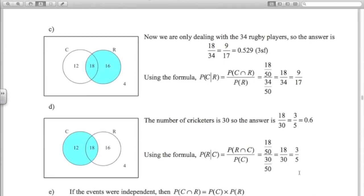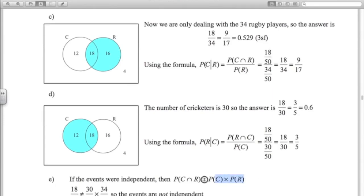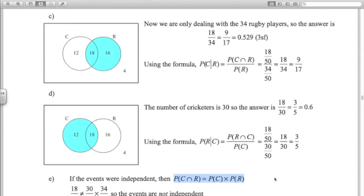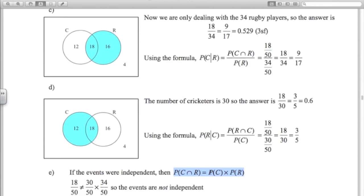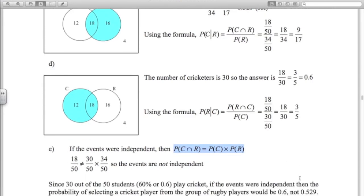Are these two events independent? If they are, then this would be true. Remember that. Don't go on gut instinct. You have to show either that that is true or not true to prove if two events are independent or otherwise. So in this case, the probability that someone is a cricketer and rugby player is 18 out of 50. Probably they're a cricketer is 30 out of 50. A rugby player, 34 out of 50. Those are not equal. You do the calculation on the left on your calculator. Not equal. Therefore, the two events are not independent.